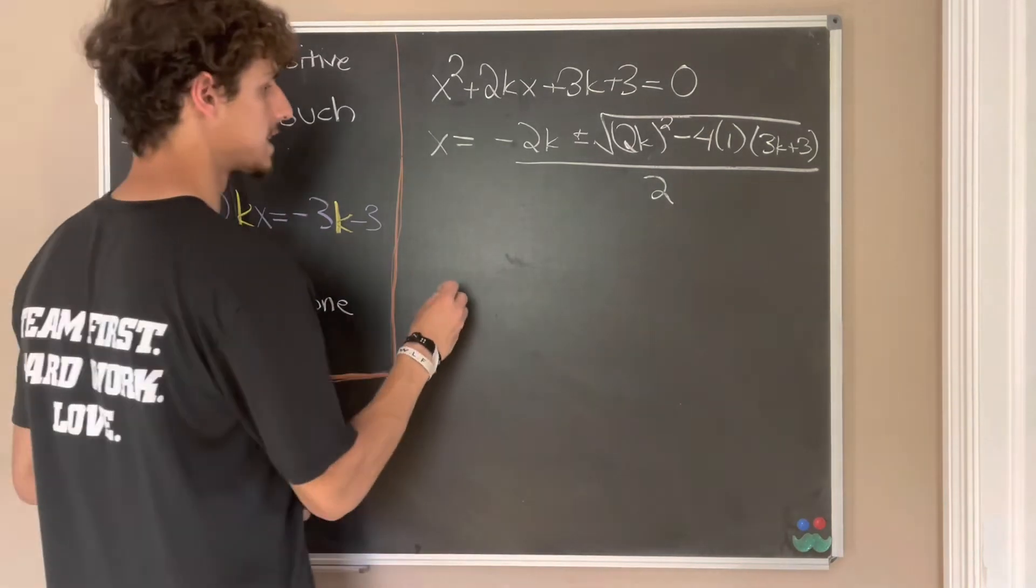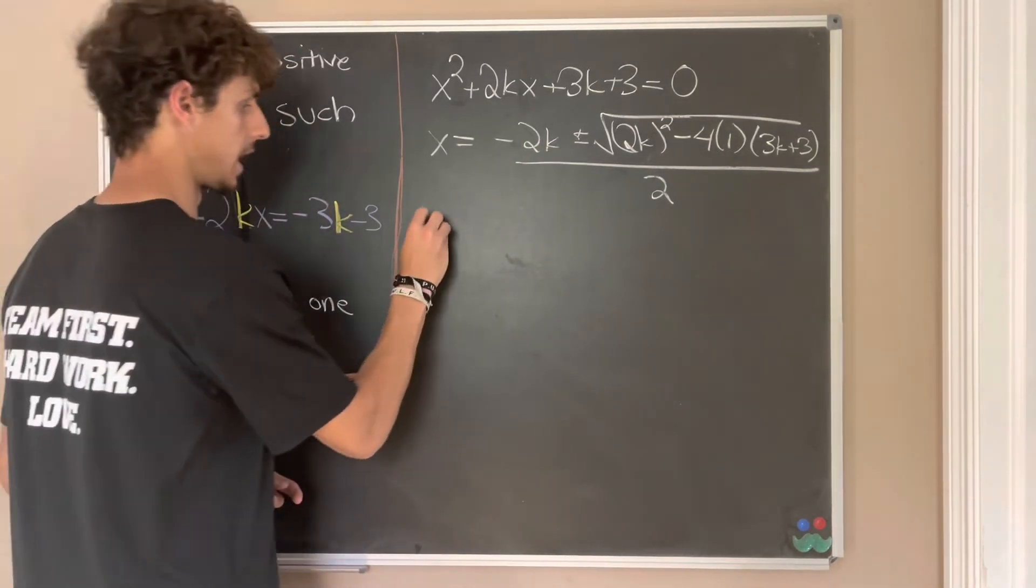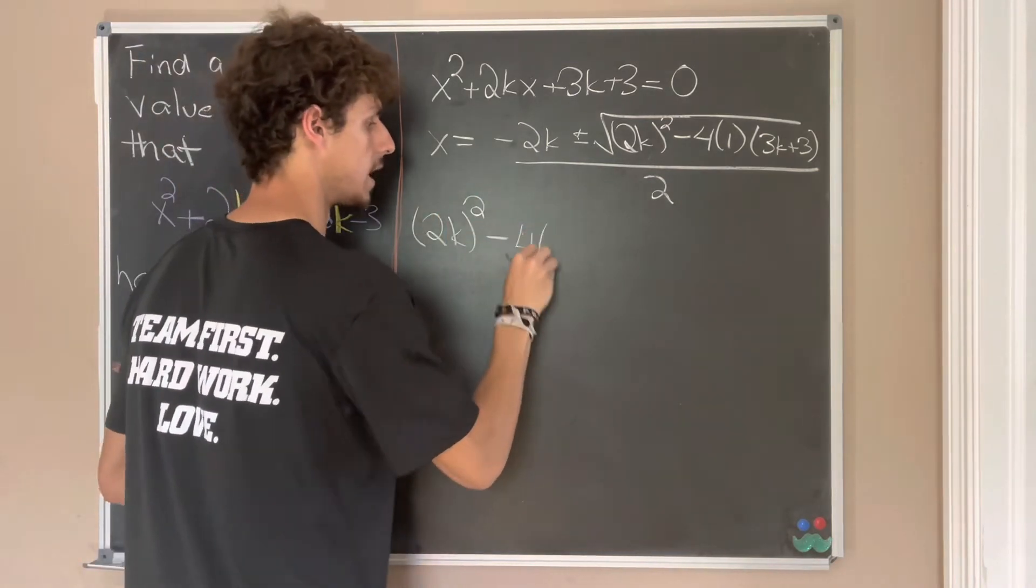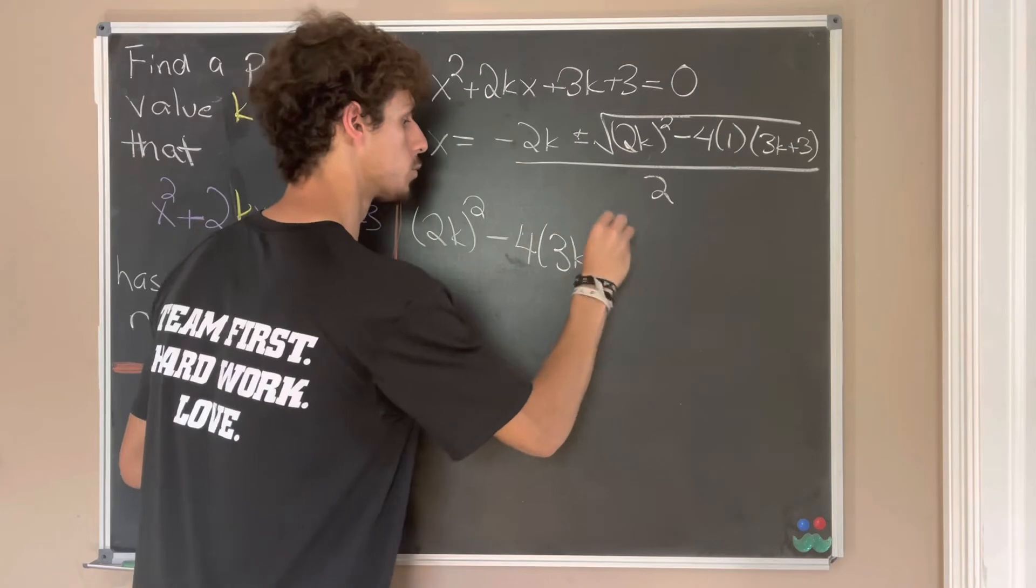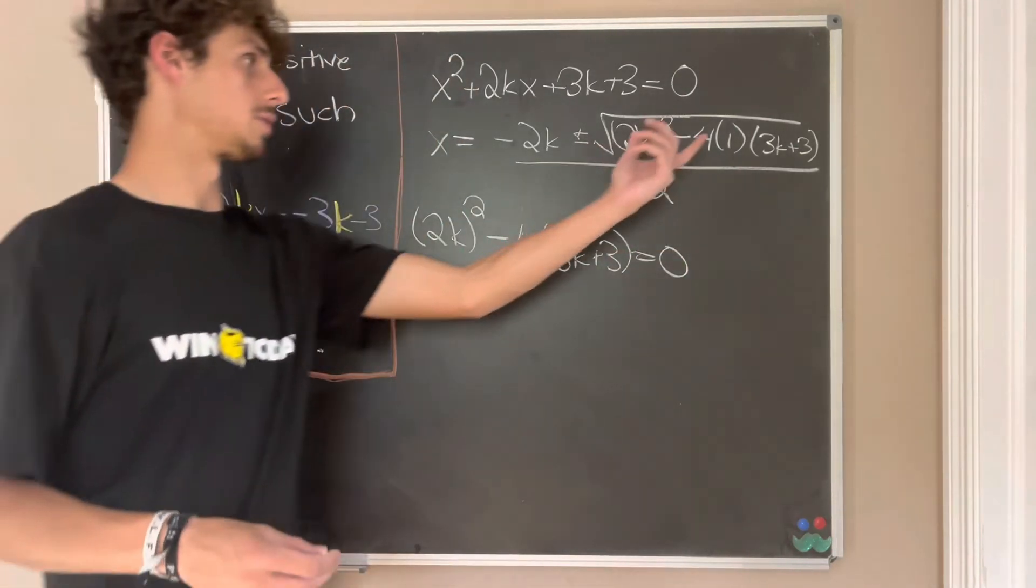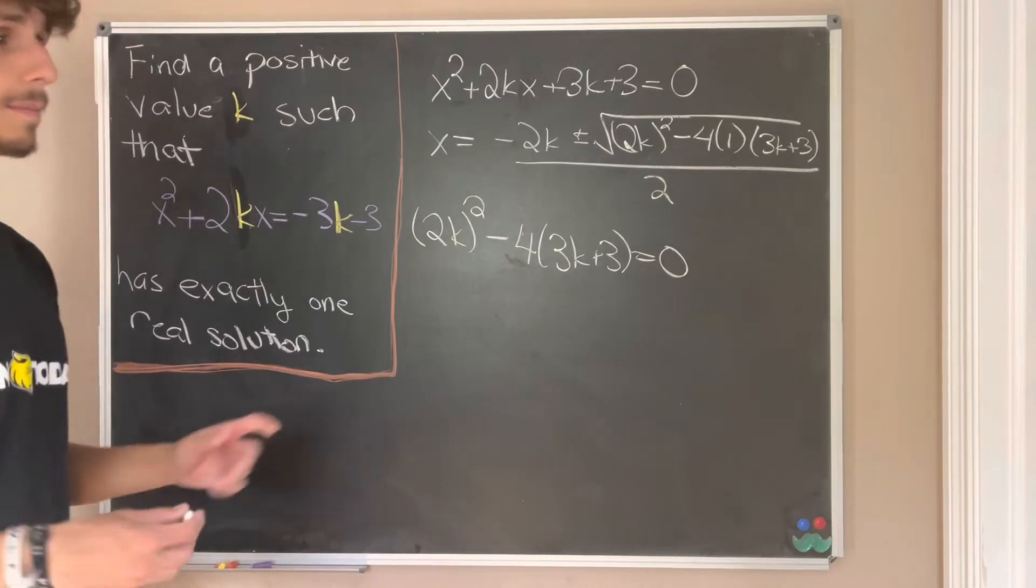But using that, we want to set that equal to zero and then solve it for k. So we'll have 2k all squared minus 4 times 3k plus 3 is all equal to zero. Because when this term goes to zero, we'll only have one solution that being negative k.